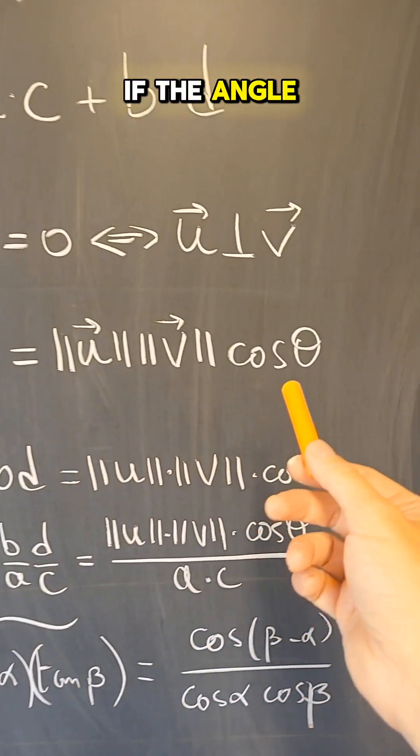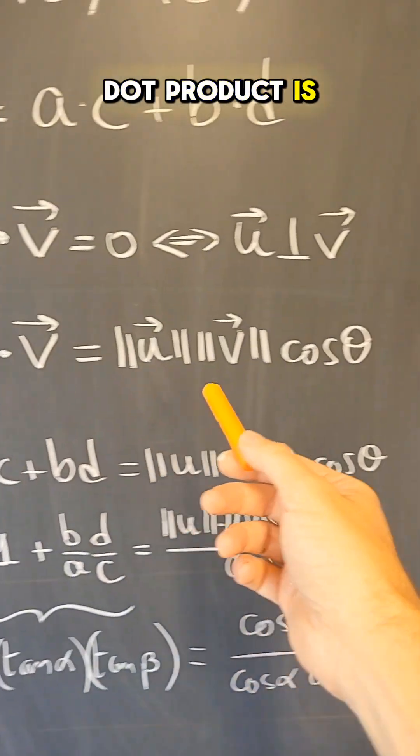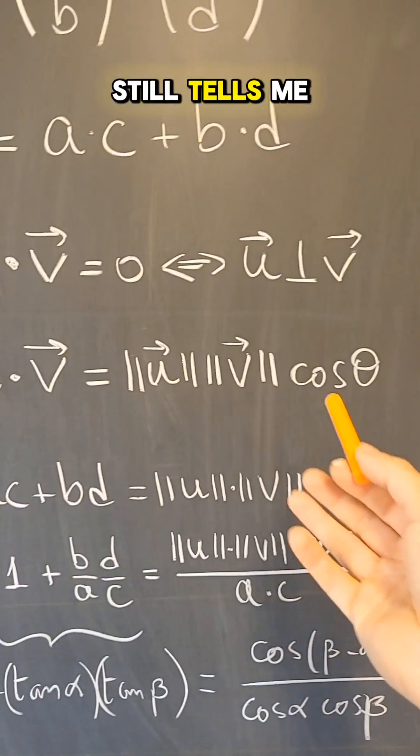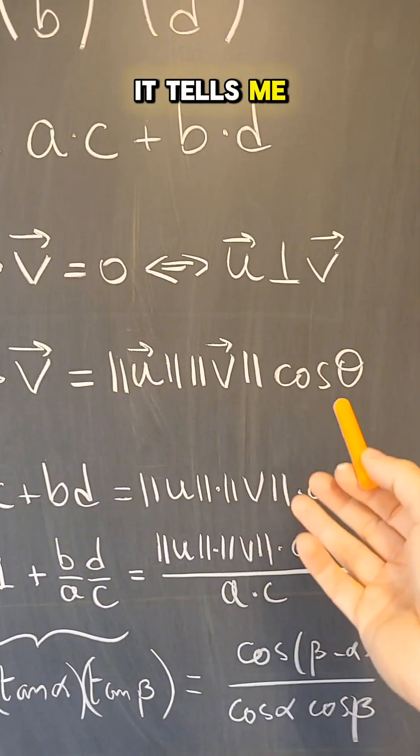And now you can see, well, if the angle is 90 degrees, this is 0, and I do get that the dot product is 0. But if they are not perpendicular, the dot product still tells me something about what's happening between the two vectors. It tells me something about the angle.